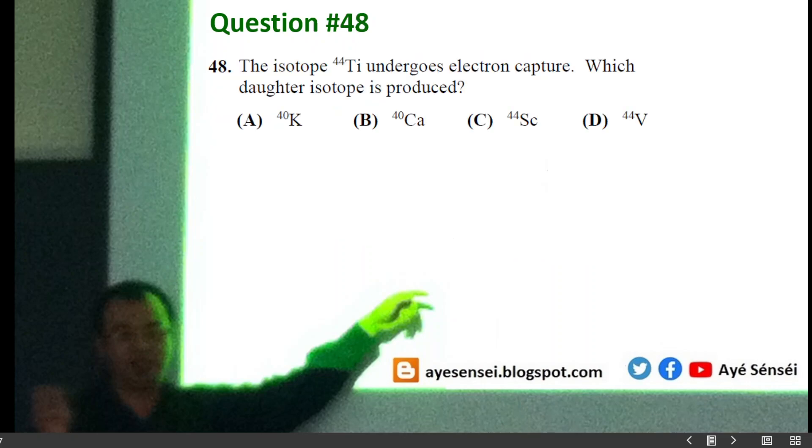Okay, let's go to question number 48. The isotope 44-22 Ca undergoes electron capture. Which daughter isotope is produced? So here's the reaction. This is not chemical reaction by the way, this is called transmutation reaction, and then the result will have atomic number of 21 and mass number of 44. Atomic number of 21 belongs to Sc, so the result is C.